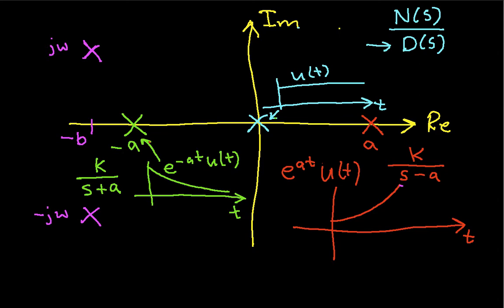It turns out that if your time functions you're working with are real valued, which in the real world all of them are, then anytime you have a pole that has a complex value, say, j omega, you're going to have another pole that has the same real value but the opposite sign for omega. So, these poles occur in complex conjugate pairs.